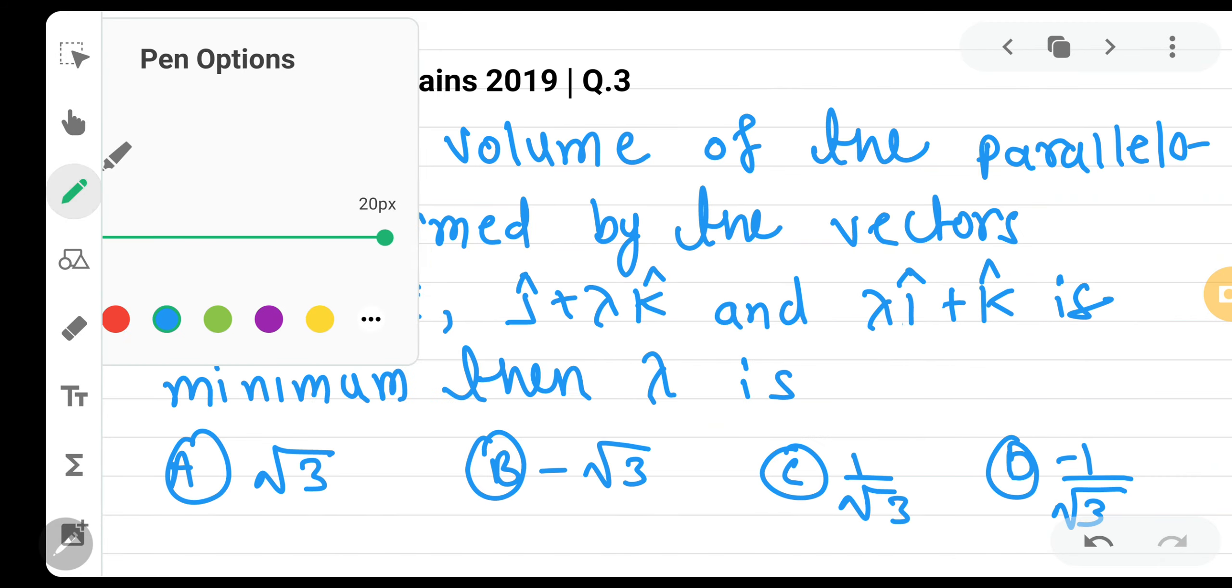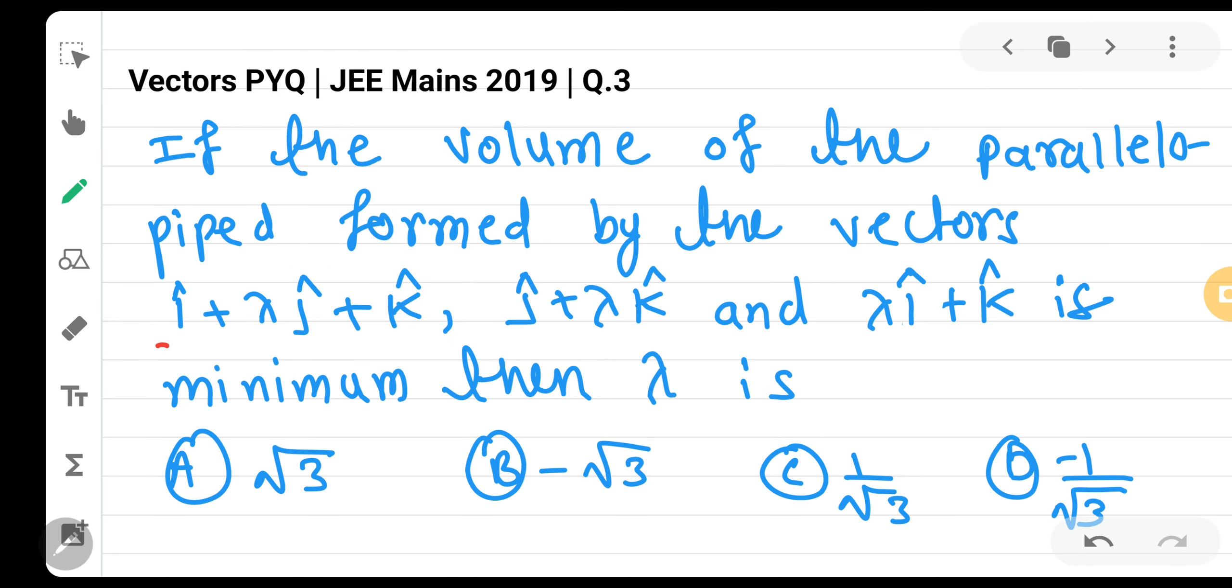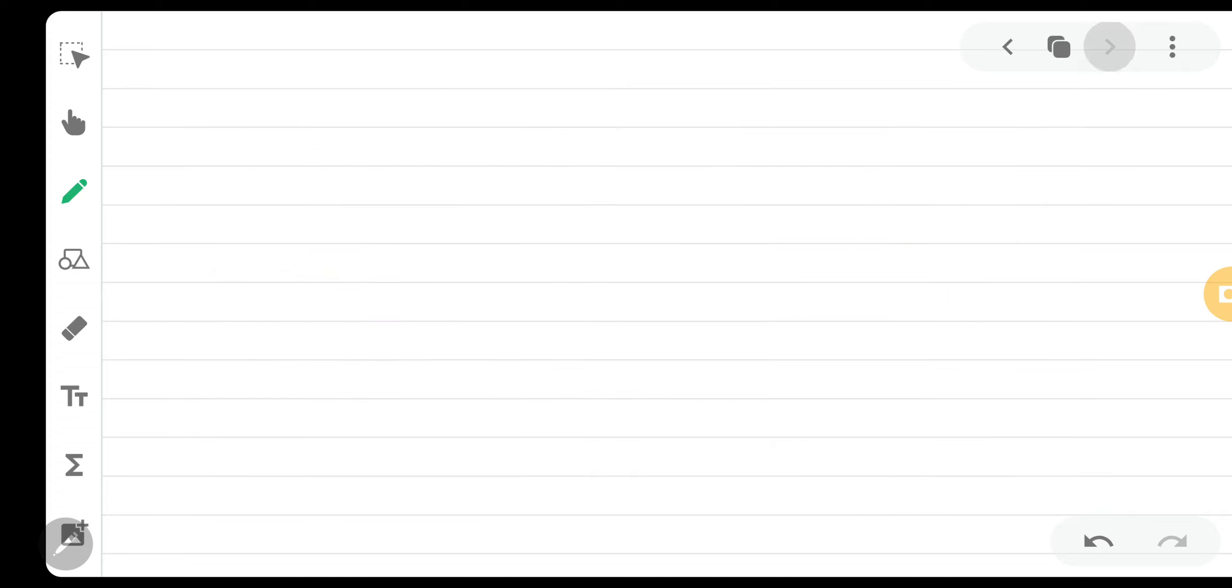If we say A bar, B bar and C bar, let me say that over here only. This is A bar, this is B bar and this is C bar. So if we talk about parallelepiped, the box product of A bar, B bar and C bar will be the volume. This is the box product.